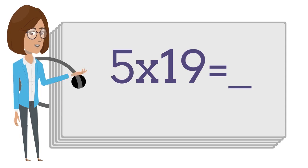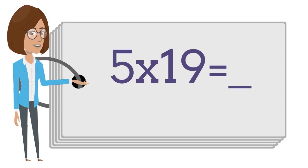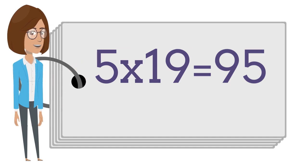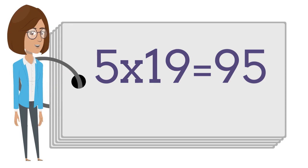Five times nineteen is? Say the answer out loud. Five times nineteen is ninety-five.